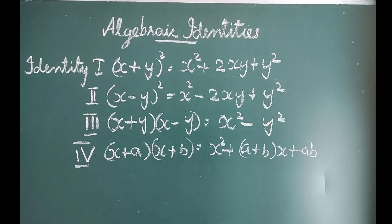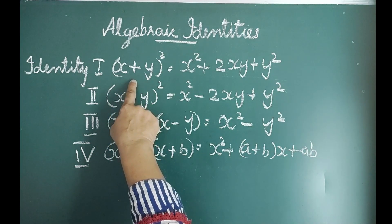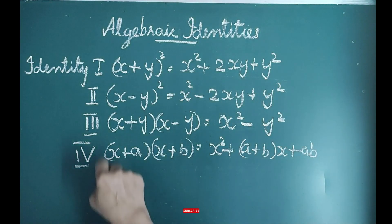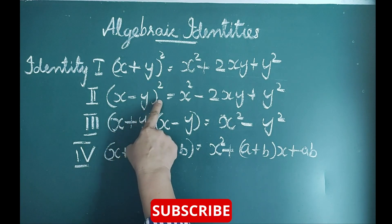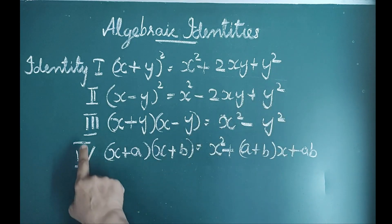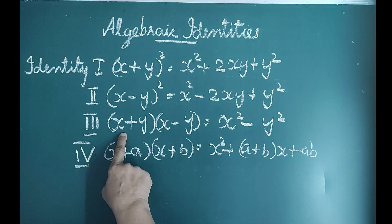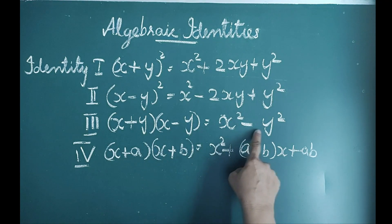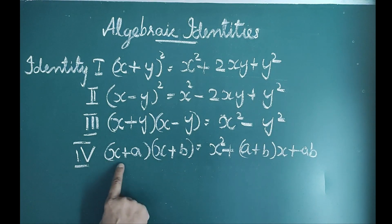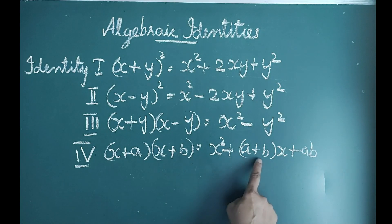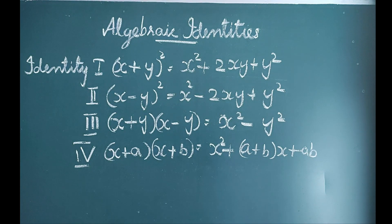The first identity is: (x + y)² = x² + 2xy + y². The second identity: (x − y)² = x² − 2xy + y². The third identity: (x + y)(x − y) = x² − y². The fourth identity: (x + a)(x + b) = x² + (a + b)x + ab.